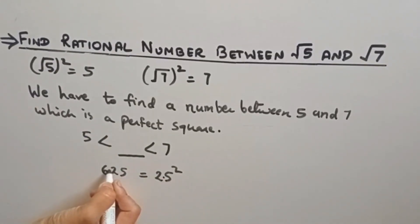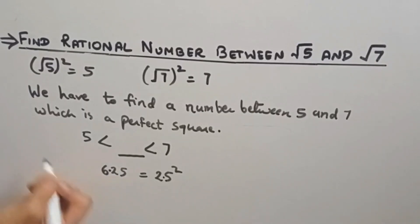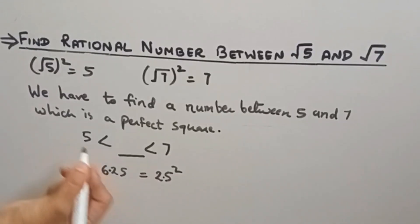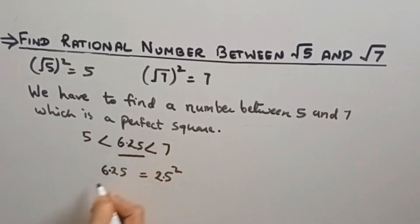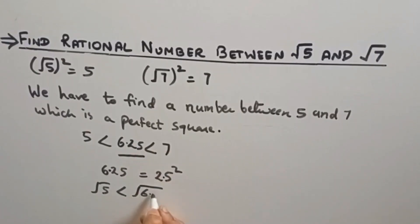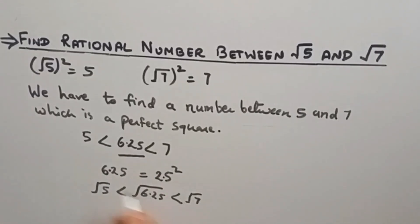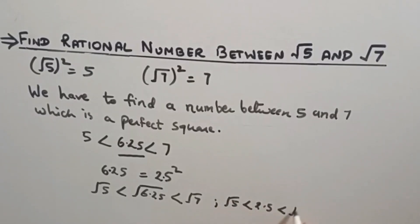Now because we are squaring, the decimal comes after two digits, and in the number 625, the decimal will come after 6, so it will become 6.25. So 6.25 is a perfect square which lies between 5 and 7. Now we will take the root: root 5 is less than root 6.25, and root 6.25 is less than root 7. As we know that 6.25 is the square of 2.5, so we write: root 5 < 2.5 < root 7. So 2.5 is the rational number which lies between root 5 and root 7.